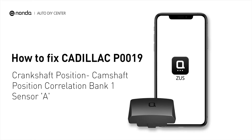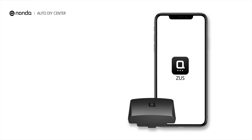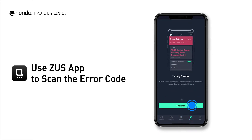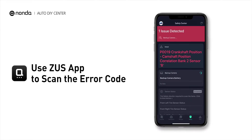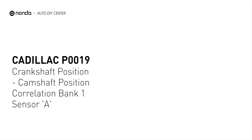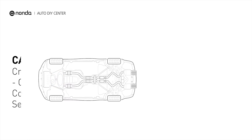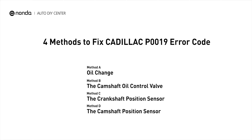This P0019 repair video is dedicated to Cadillac drivers. If your Cadillac is getting a P0019 error code, this video is going to show you four practical solutions to fix the error code at home. Use the Zeus app to scan your vehicle and see the error code P0019. It indicates that the camshaft position sensor A for bank 1 does not correlate to the signal from the crankshaft position sensor. Here are four of the most practical solutions to fix Cadillac's P0019 error code.